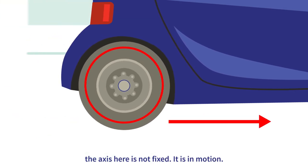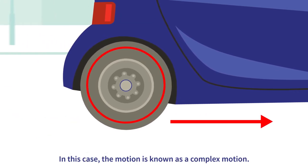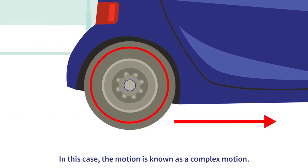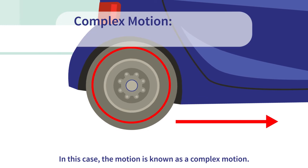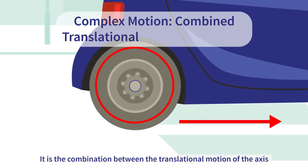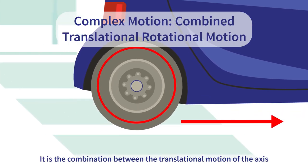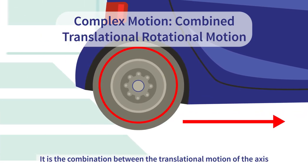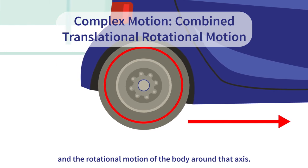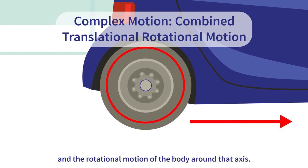In this case, the motion is known as complex motion. It is the combination between the translational motion of the axis and the rotational motion of the body around that axis.